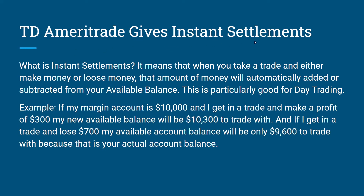TD Ameritrade gives instant settlements, which is really good for margin accounts. Instant settlements means that when you take a trade and either make money or lose money, that amount is instantly added or subtracted from your available balance — which is really good for day trading. For example, if my margin account had $10,000 and I make a profit of $300, my available balance is now $10,300. If I then get into a trade and lose $700, my account balance will be $9,600.